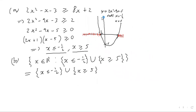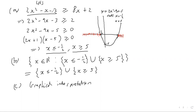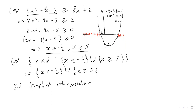Part c is the graphical interpretation of our result. Going back to the original inequality — 2x squared minus x minus 3 greater than or equal to 8x plus 2 — what we're asking is: for what values of x is y equals 2x squared minus x minus 3 greater than or equal to y equals 8x plus 2? So we sketch both graphs.